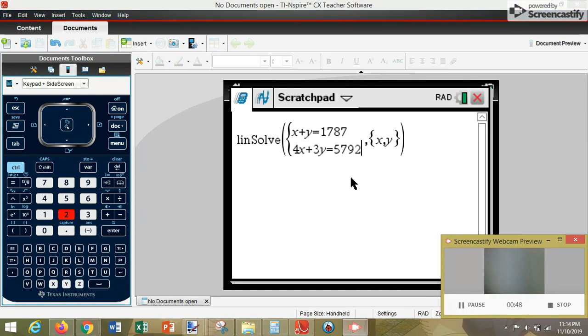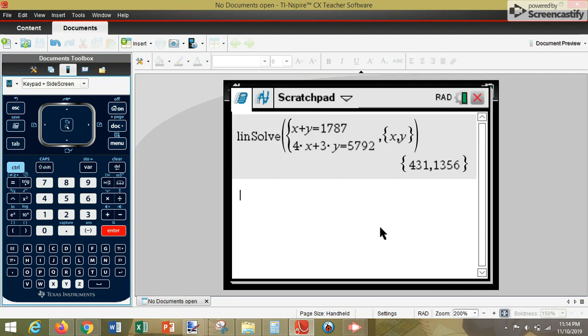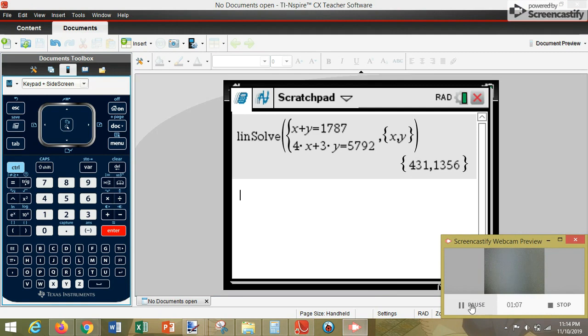After you've typed it in, double check to make sure everything is exactly correct. And there's no commas here. It will throw everything off. After you're done, go ahead and press enter. That is your solution. That basically means X equals 431 and Y equals 1,356.